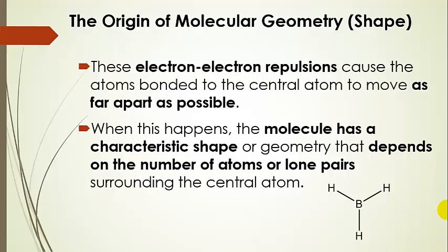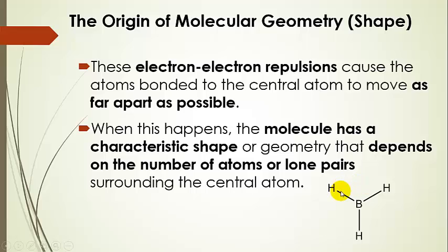The shape depends on the number of atoms and lone pairs surrounding the central atom. Here we can see boron is bonded to three hydrogens, and I've drawn it with a trigonal planar shape because this is the farthest apart that these bonds can be from each other. We're going to see how to determine what the shape should be based on the bonding and the number of lone pairs.